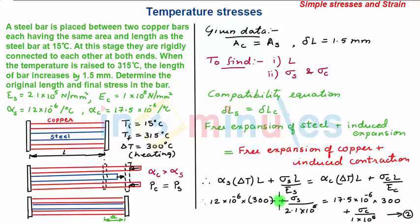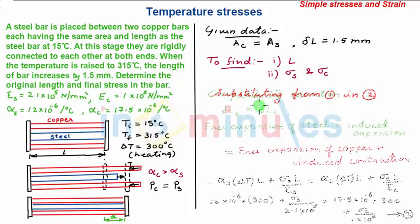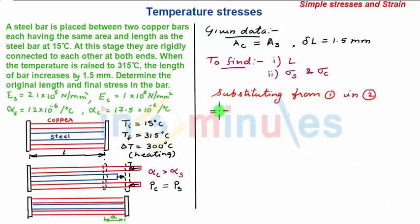Now substituting from equation 1 into equation 2, we get sigma_S in terms of sigma_C. So sigma_S will be minus 2 sigma_C. While solving, taking terms to appropriate sides, we get minus 5.5 times 10^-6 equals 2 sigma_C upon 2.1 times 10^5 plus sigma_C upon 1 times 10^5.